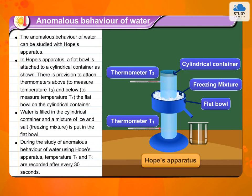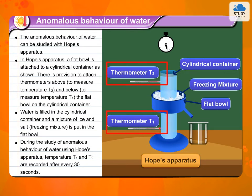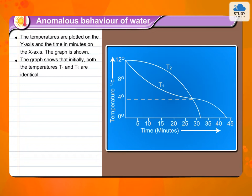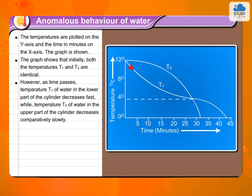During the study of anomalous behaviour of water using Hope's apparatus, temperatures T1 and T2 are recorded after every 30 seconds. The temperatures are plotted on the y-axis and the time in minutes on the x-axis. The graph shows that initially both the temperatures T1 and T2 are identical. However, as time passes, temperature T1 of water in the lower part of the cylinder decreases fast, while temperature T2 of water in the upper part of the cylinder decreases comparatively slowly.